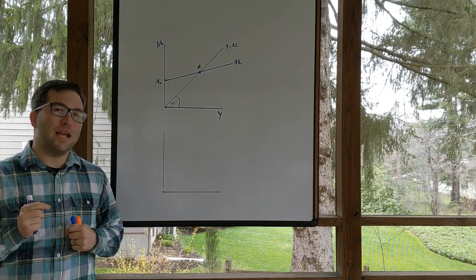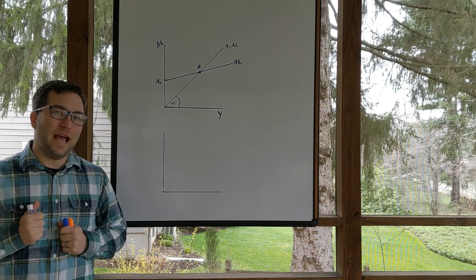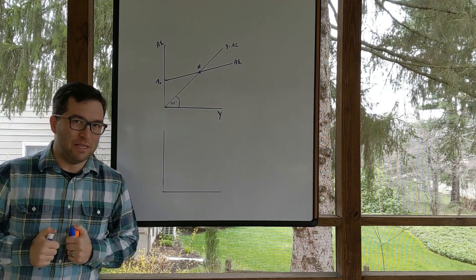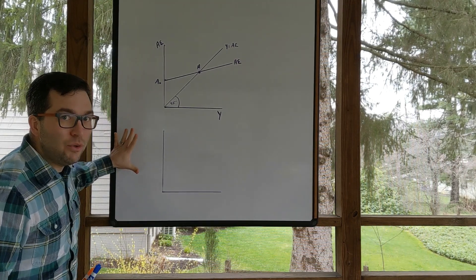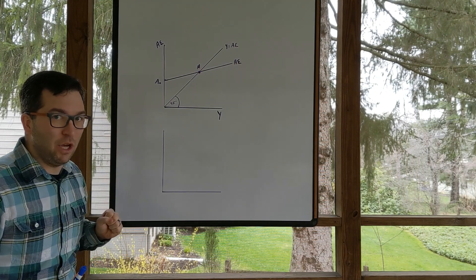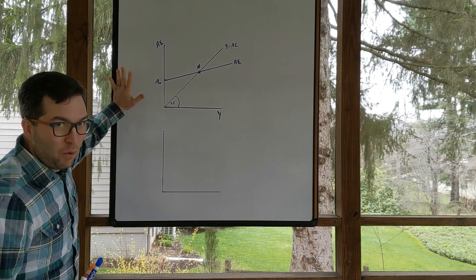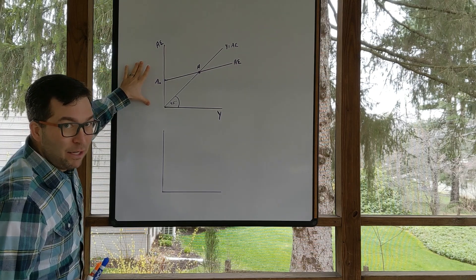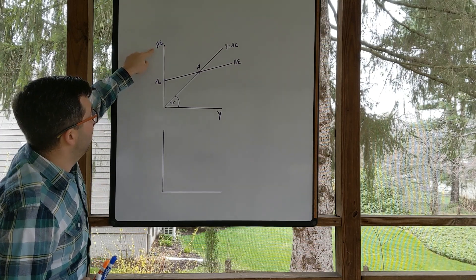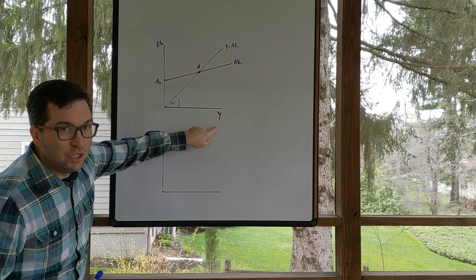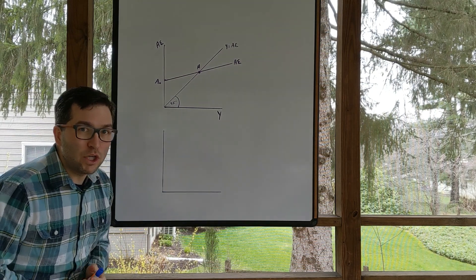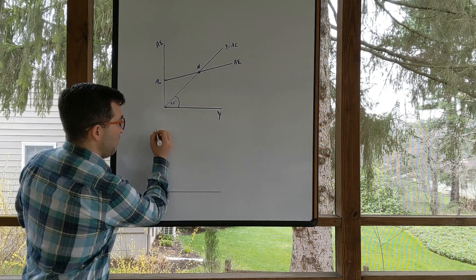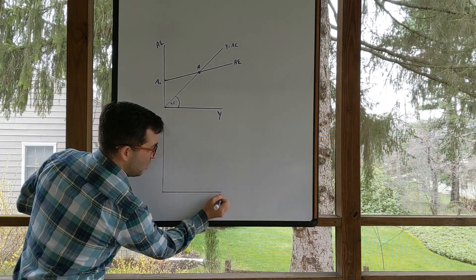Let's go ahead and create the aggregate demand curve from the aggregate expenditure model that we've already seen. I've stacked two two-dimensional graphs on top of each other, and that's for a very important reason. Up on the top we have the aggregate expenditure model, which is showing the relationship between aggregate expenditure and real GDP. Down here we're going to create the aggregate demand curve. Aggregate demand is a relationship between the price level and real GDP.